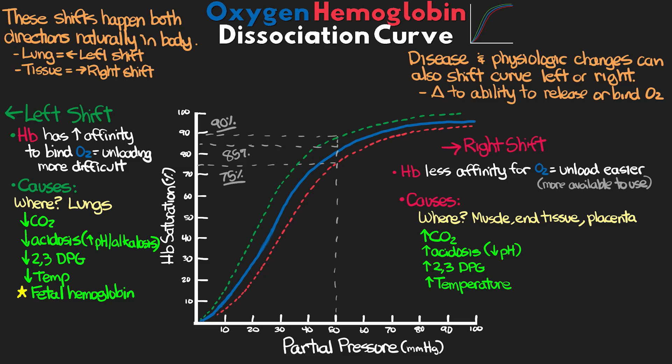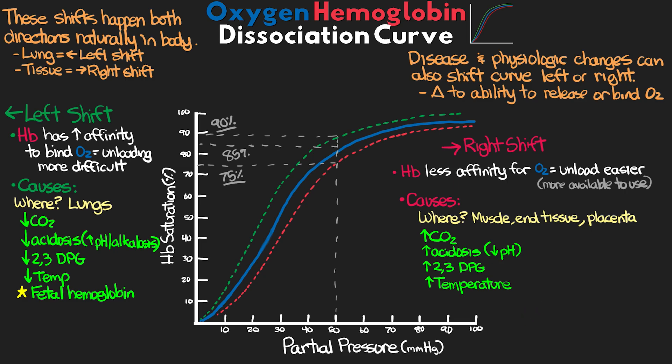Hopefully the oxygen hemoglobin dissociation curve makes a little more sense now and is less intimidating — especially when thinking about right and left shifts, which are always happening within our patient's body. For the critically ill patient, we'll often have different physiologic changes additionally shifting these curves further left or right, impacting oxygen availability, oxygen delivery, binding of oxygen to hemoglobin, and how much oxygen is available to end tissue. If you found this useful, please leave a like and a comment below.